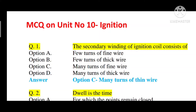Welcome back. Today we will see multiple choice questions on Unit Number 10: Ignition of Internal Combustion Engine. Question number one: the secondary winding of ignition coil consists of — option A: few turns of fine wire, option B: few turns of thick wire, option C: many turns of fine or thin wire, option D: many turns of thick wire.